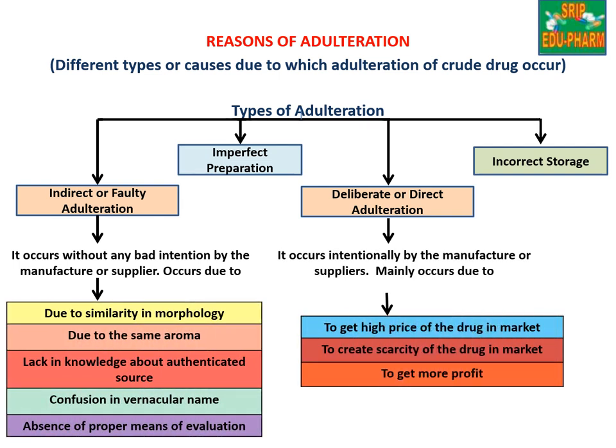Reasons of adulteration. There are four types: first, indirect or faulty adulteration; second, deliberate or direct adulteration; third, imperfect preparation; fourth, incorrect storage.